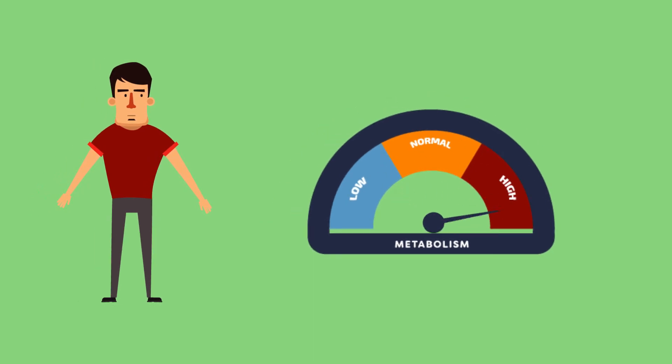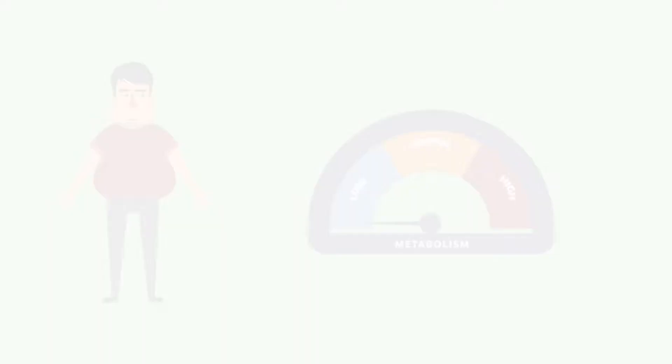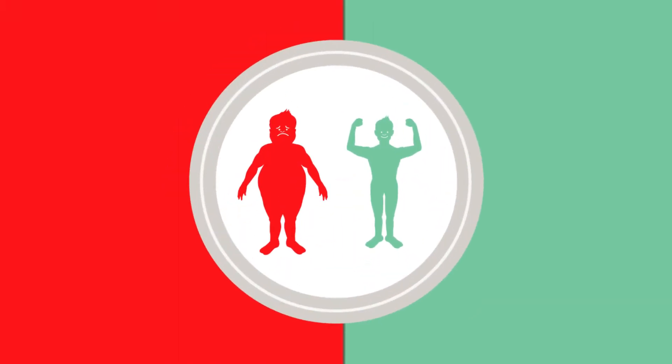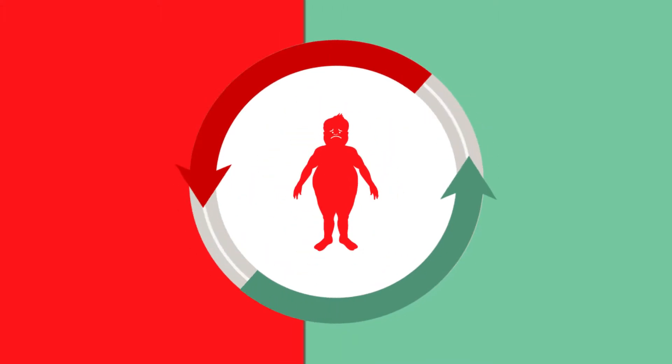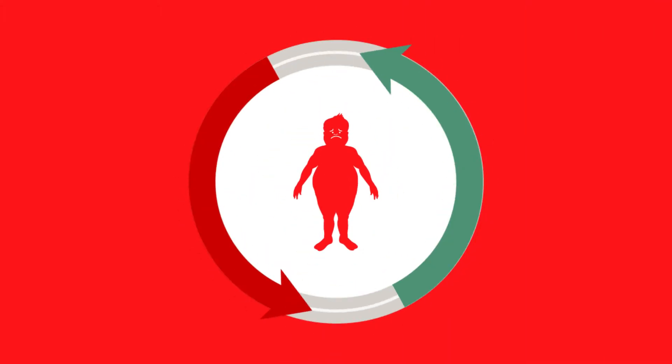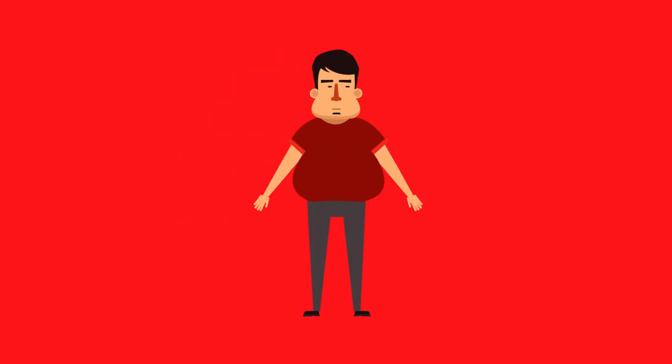As metabolism slows, people who continue to eat the same number of calories will gain weight because the energy is not used as quickly. As we age, our amount of physical activity also tends to decrease, and weight gain becomes even more likely. A slow metabolism and excess in calorie intake is what makes us gain all the extra pounds.